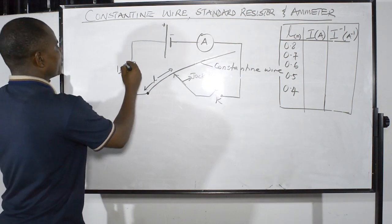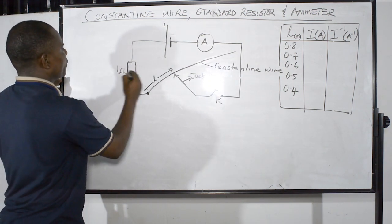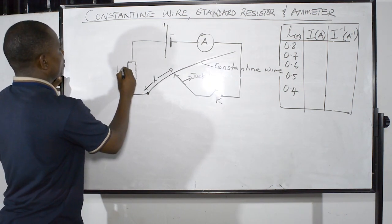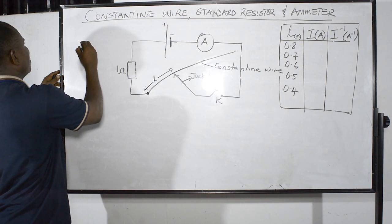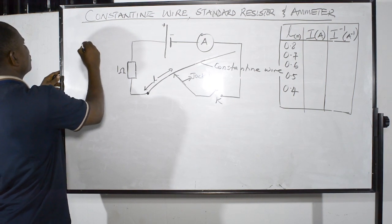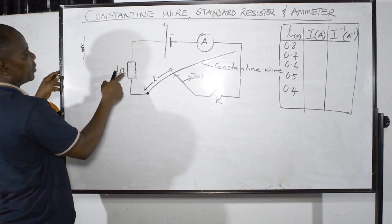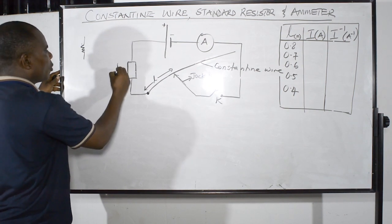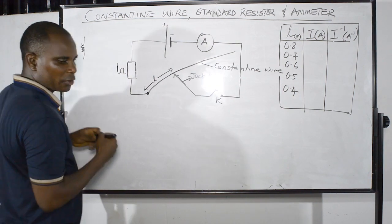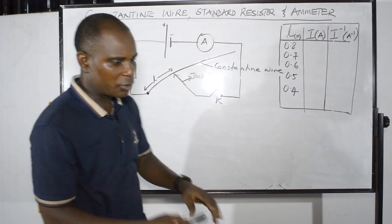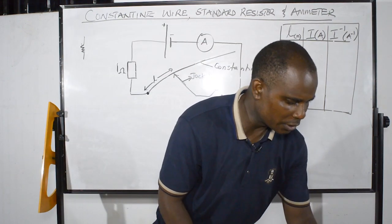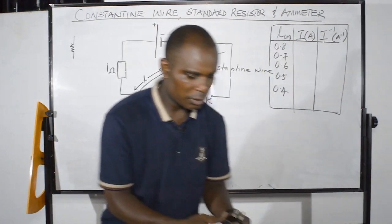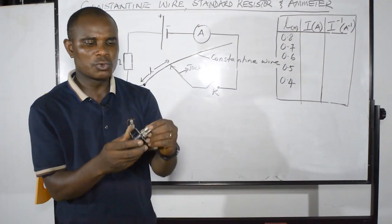This is a resistor — a fixed resistor. It could also be in this form. This way is another resistor — that's a one ohm resistor. I'm going to show you all of them. This is a two ohm resistor.